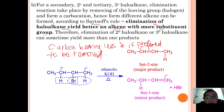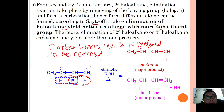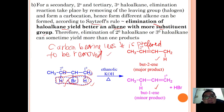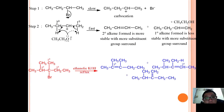For example, with 2-bromobutane there are two possibilities: HBr can be removed from the carbon bearing three hydrogens (primary carbon, rectangular side) or from the carbon bearing two hydrogens (secondary carbon). According to Zaitsev's rule, the carbon bearing fewer hydrogens is preferred, so the primary carbon side is removed, forming but-2-ene as the major product. Removing from the other side forms but-1-ene as the minor product.